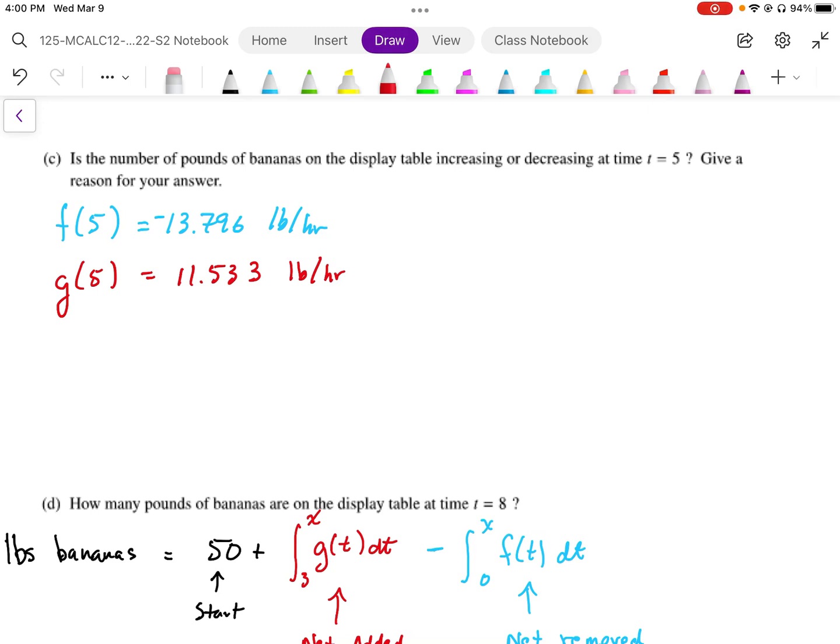So when we combine these rates together, we're going to have our positive rate for g of 5 minus the negative rate, which is f of 5, and if we subtract these two values, we're going to end up with a negative value. So 11.533 minus 13.796. We have to be careful of the sign. We have to make either going to add the negative or we're going to subtract, and we end up with a negative rate. So this is 2.263, and this is pounds per hour.